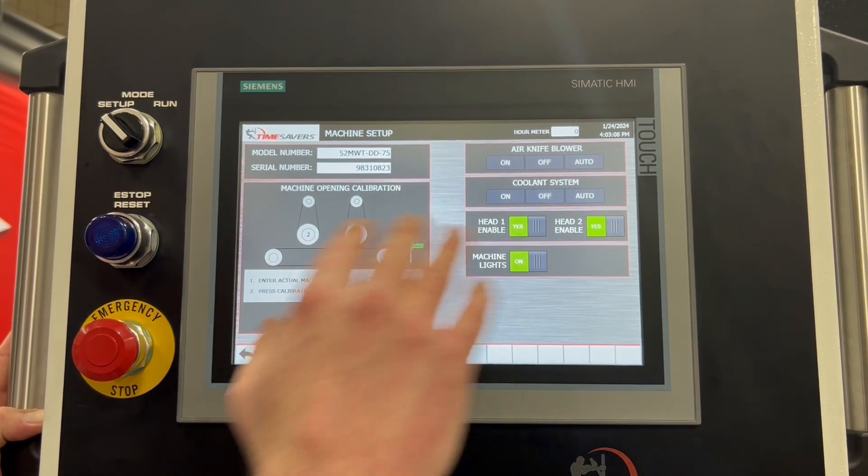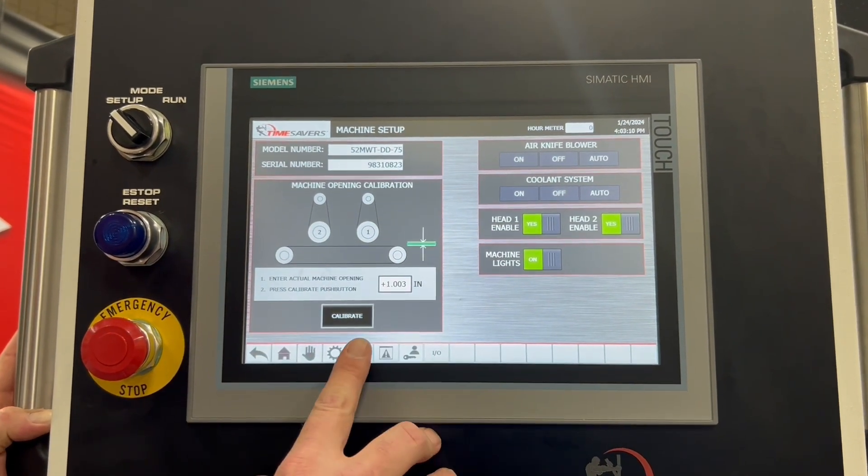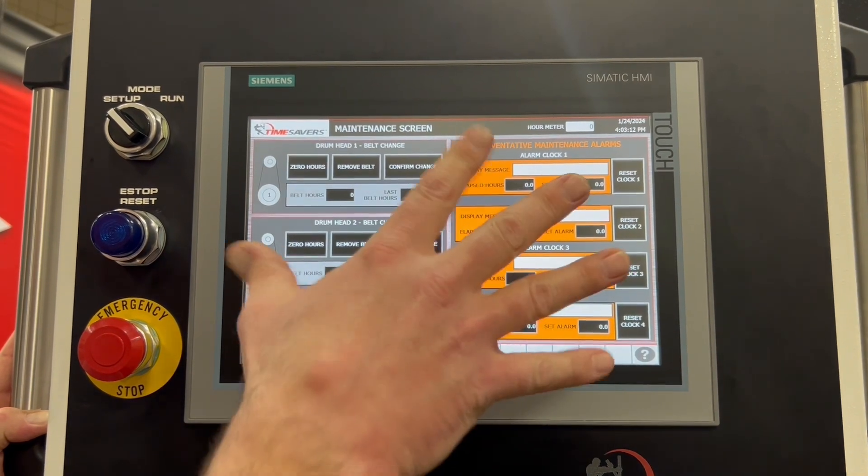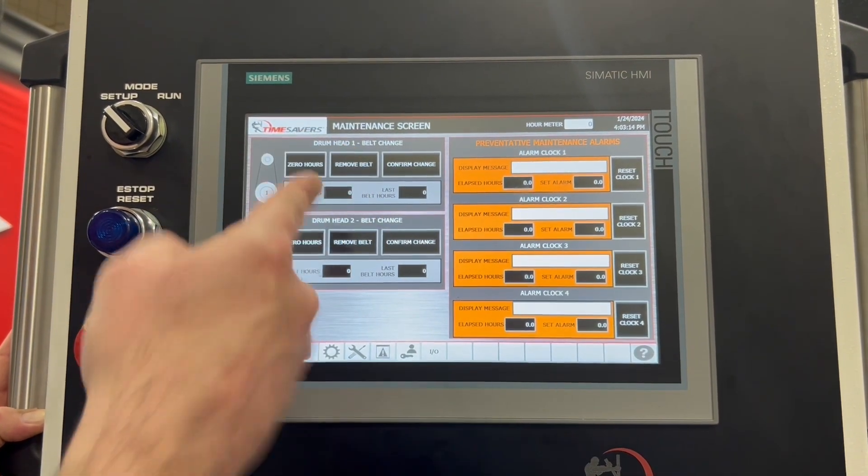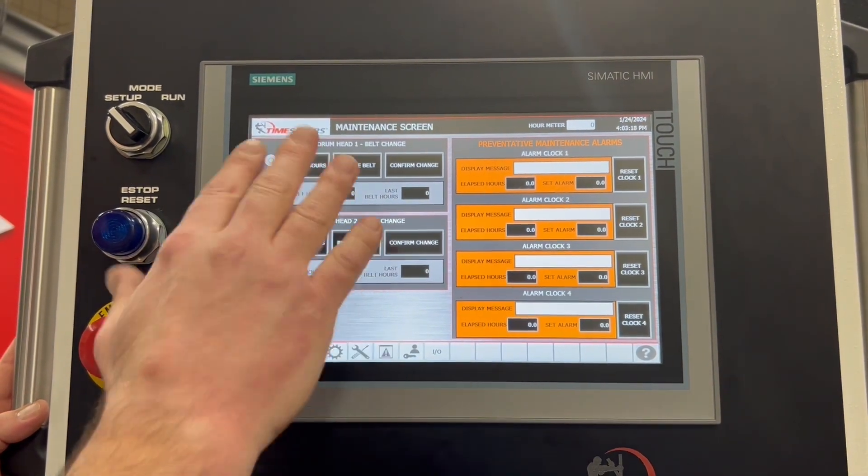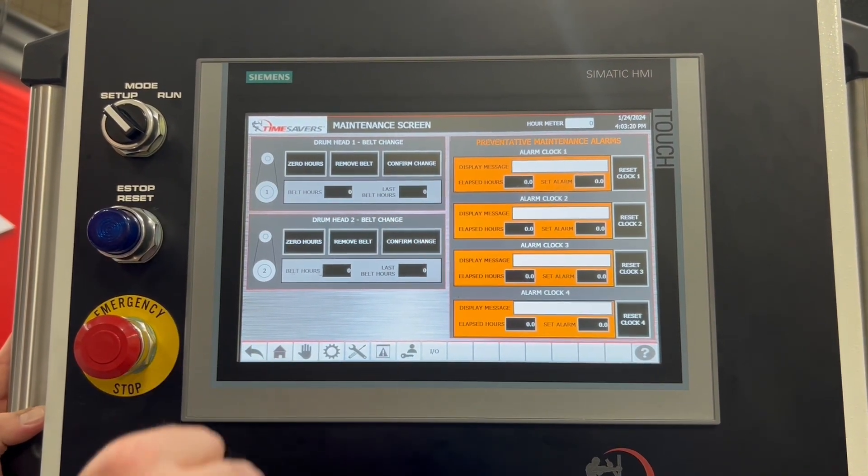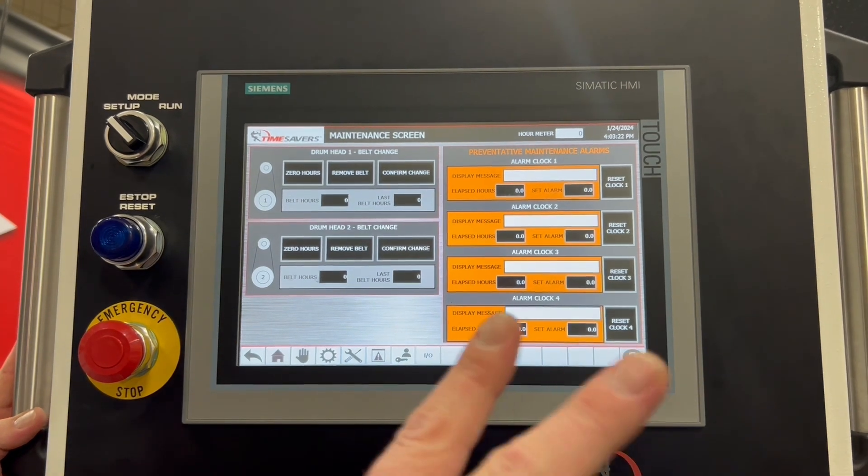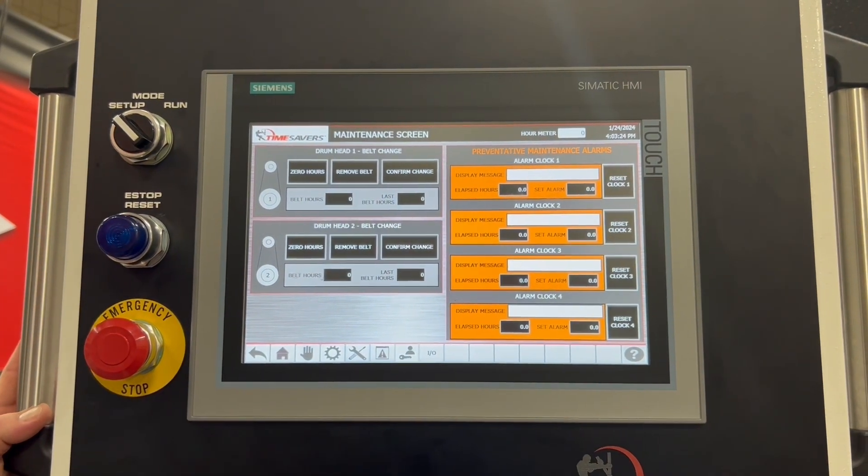We also have our setup mode here for setting up the machine and recalibrating the bed. We also have a maintenance screen where we can pre-determine abrasive belt wear and pre-program that, and then it will give us a message saying that the abrasive belt needs to be changed.